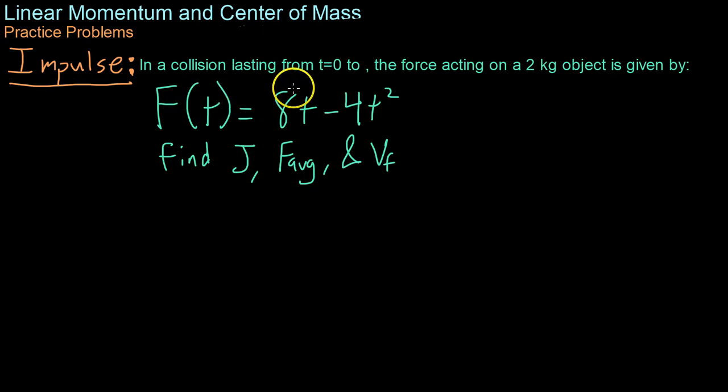We'll start off with a problem dealing with the concept of impulse. In a collision lasting from t equals 0 to t equals 2, basically a two-second collision or force, the force acting on a 2 kilogram object is given by this equation right here. And what we want to do is find the total impulse, the average force acting on it, as well as the final velocity.